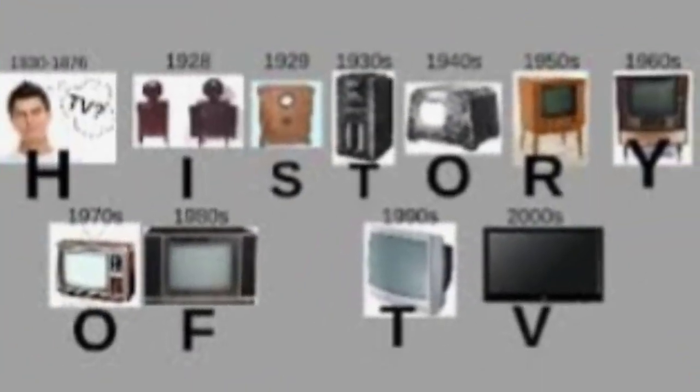Electronic television was first successfully demonstrated in San Francisco on September 7, 1927. The system was designed by Philo Taylor Farnsworth, a 21-year-old inventor.